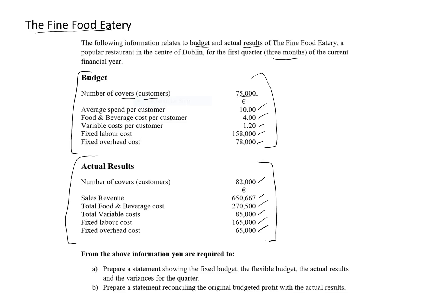Now what we're asked to do is: part A, prepare a budget control statement showing the fixed budget, the flexible budget, the actual results, and the variances for each quarter. And then in part B, prepare a statement which reconciles the original budgeted profit with the actual results.